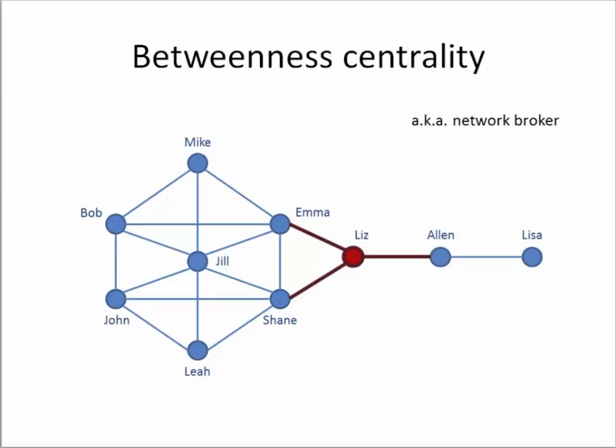We can see in this example that Jill is quite central in a group with six other nodes including Mike, Emma, Shane, Leah, John, and Bob. However, Liz also has a very good connection with the other two nodes, Alan and Lisa. Therefore, if Liz were removed from this network, the entire connection between Alan and Lisa would completely collapse from the rest of the community. Liz plays an important role called a network broker, and her brokerage role can be best confirmed by measuring betweenness centrality.